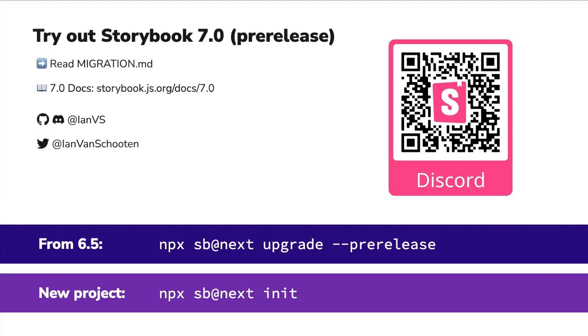If you're feeling a little brave, we'd love for you to try it out and give us feedback. If you do, be sure to check out the migration guide if you're coming from an earlier version. And on the official docs site, choose 7.0 for the version and whatever framework you're using. And of course, if you have questions or suggestions, you can find me on GitHub and both the Storybook and Vite Discord at ianvs, or on Twitter at ianvanschooten. Thank you so much for your time, and I hope you enjoy the rest of ViteConf.